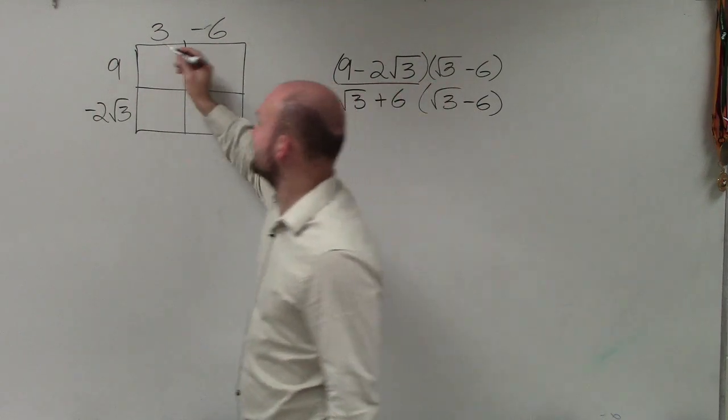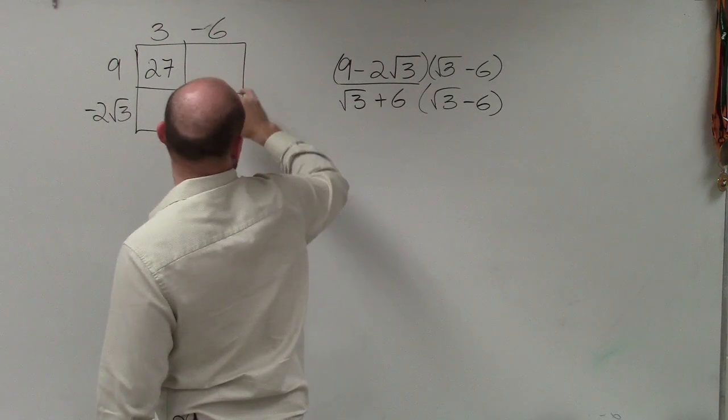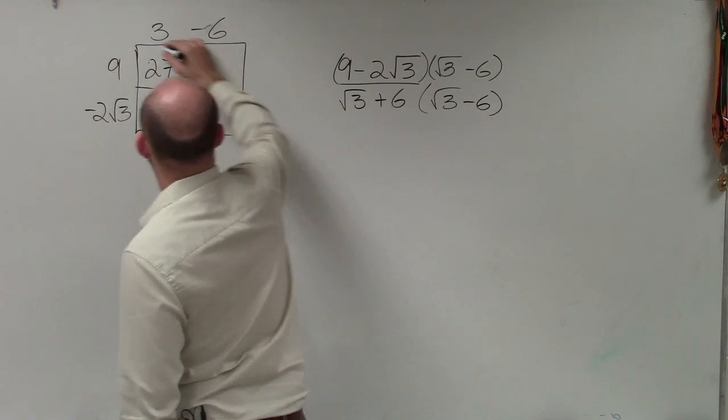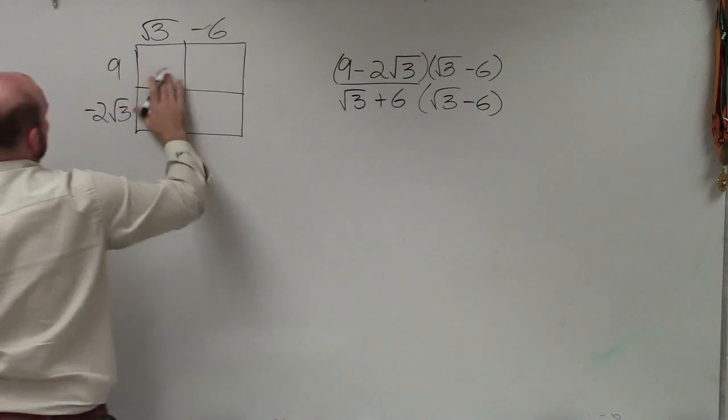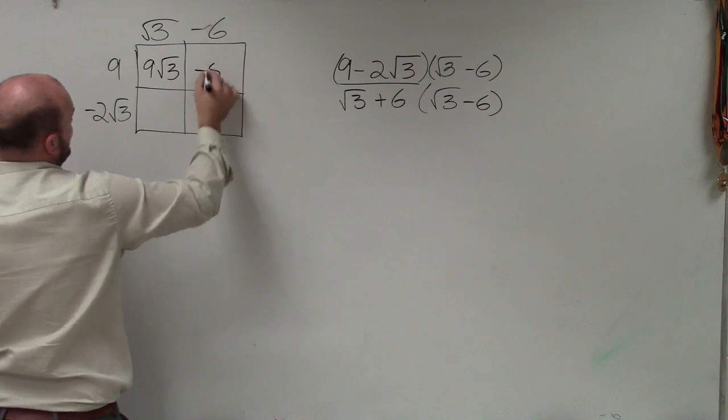When we go ahead and go through this, I do 9 times √3, which is 9√3. 9 times negative 6 is negative 54.